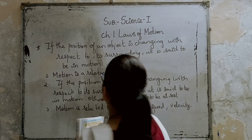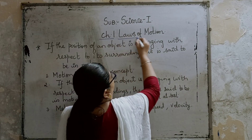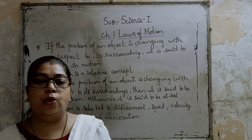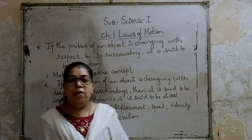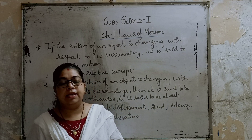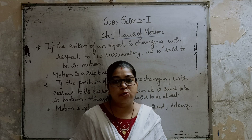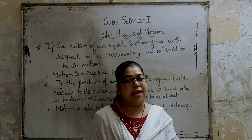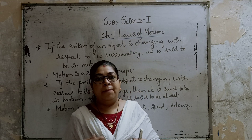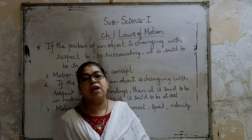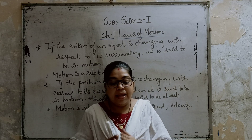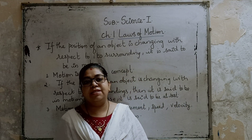Let's begin with Chapter Number 1, Laws of Motion. What is motion and what are the laws of motion we are going to study in this chapter? This chapter belongs to physics. About motion, we have already studied in lower classes — in 7th standard and a little in 8th standard. Whenever an object leaves its place and tries to move from its position, in simple language, that is called motion.